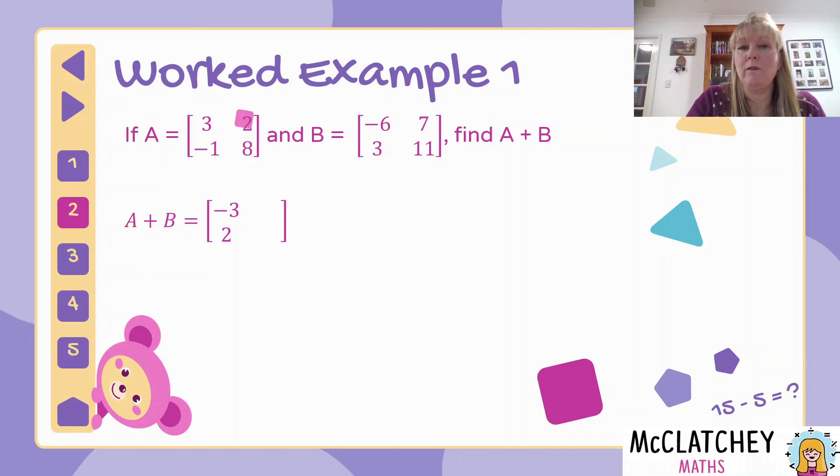Then I'm going to move to element 12, which is row one, column two, which is two plus seven gives me nine. And then lastly, I'm going to move to row two, column two, which is element 22 and add eight to 11. And I get 19.